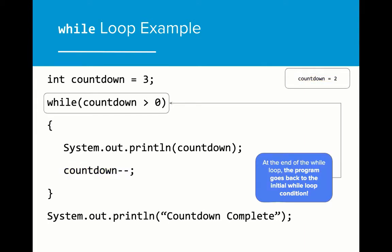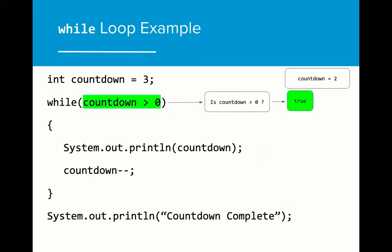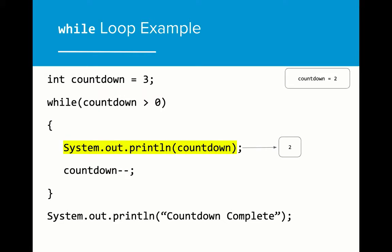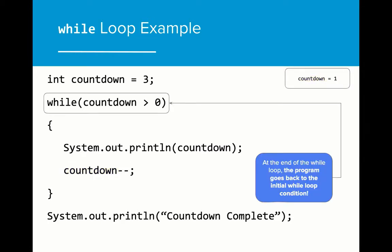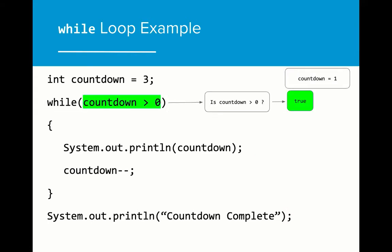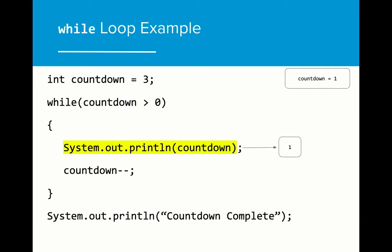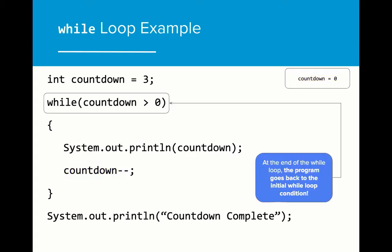The code within the while loop has finished. The program will go back to the initial while loop condition to test if the condition is still true. Since the condition is still true because two is greater than zero, the while loop will run again. The value of countdown will print, which is now two, and then the value of countdown is reduced by one. The while loop then returns to the beginning to test the initial condition again. The value of countdown is greater than zero, so the while loop executes. The value of countdown is printed, and then countdown is reduced by one.